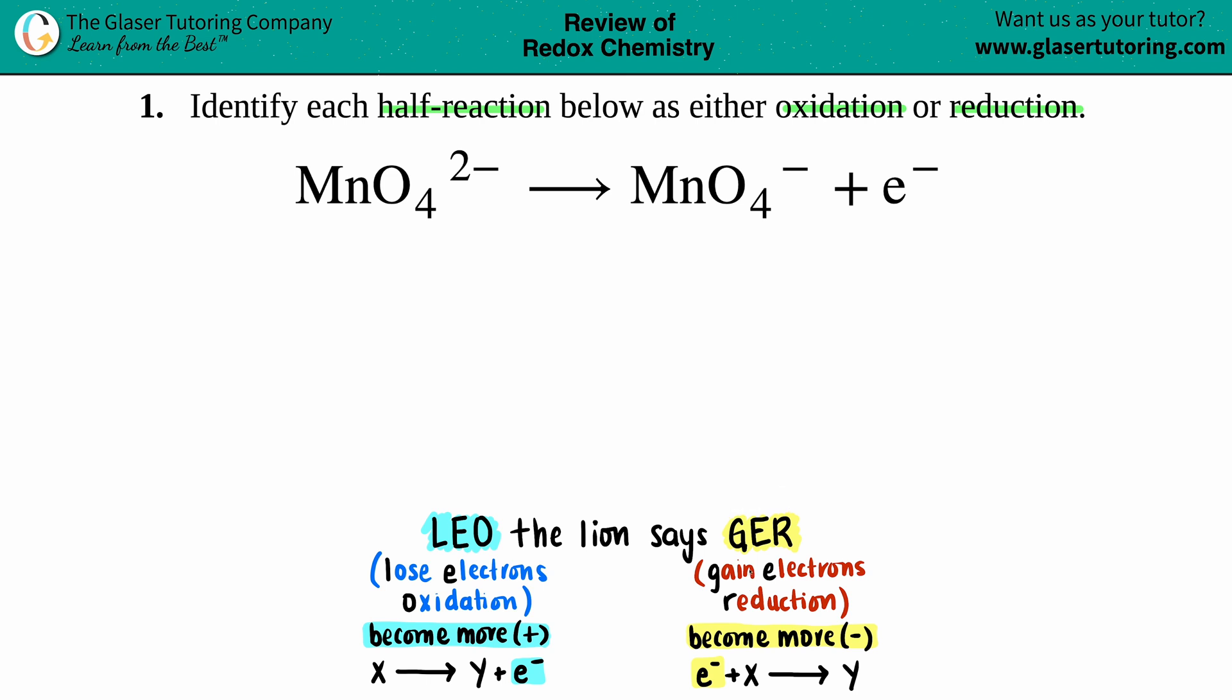Now when they give you a balanced equation, the easiest thing to do is to just check where those electrons are in your balanced equation, whether they're on the product side or whether they're on the reactant side. In this case, our electrons are on the product side. Anytime that you have something on the product side, that means it's being put out, basically into the atmosphere, or you're losing it, or that's what you made as the product.